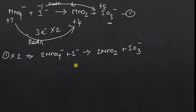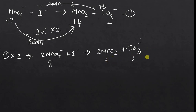Now we have to balance the number of oxygen atoms. On the left side, 2 × 4 gives 8 oxygen atoms. On the right side, 2 × 2 gives 4 oxygen, plus 3 oxygen, totaling 7 oxygen. So I am adding one OH⁻ ion to compensate for the difference in oxygen.